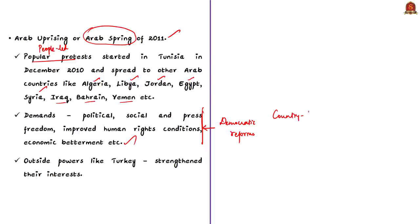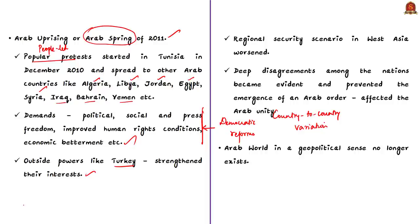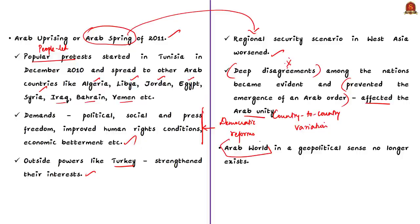Major regional countries fought political and diplomatic wars to assert influence over the Arab region, while outside powers like Turkey strengthened their interests by intervening in these conflicts. The regional security scenario in West Asia further worsened with the arrival of the Arab Spring. At the end of these protests, deep disagreements among the nations became very evident, preventing the emergence of Arab solidarity and affecting Arab unity as envisaged by the Arab League. According to the author, the Arab world, in a geopolitical sense, no longer exists.